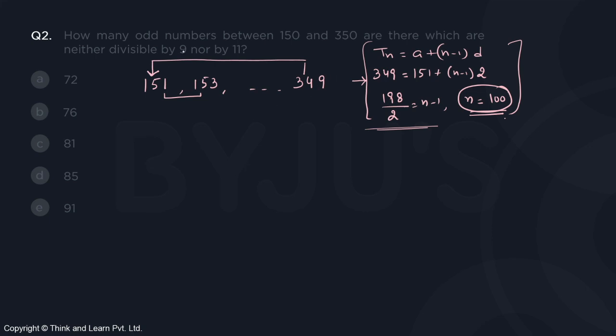Next, the question says none of them should be divisible by 9 or 11. So let us calculate the number of numbers which are divisible by 9 or 11. I will subtract that from the total.